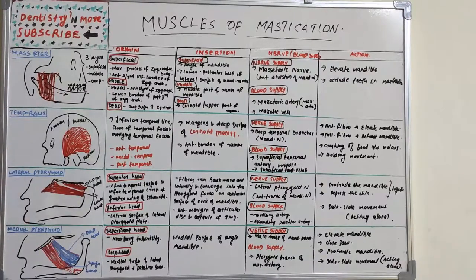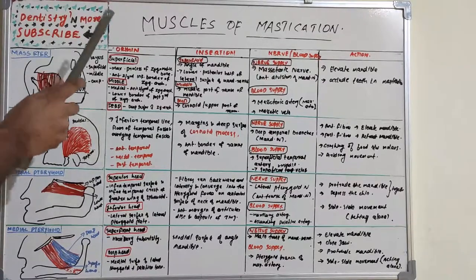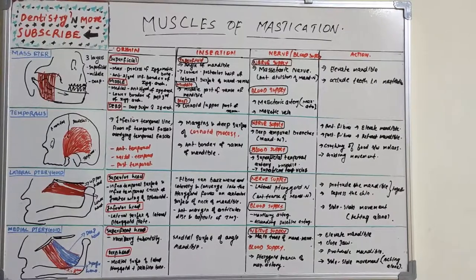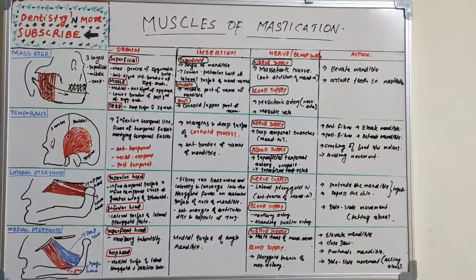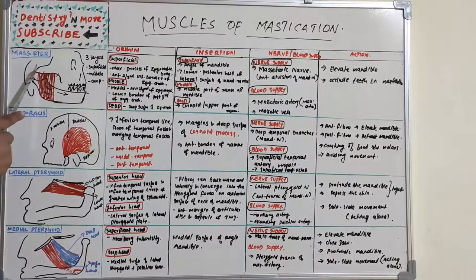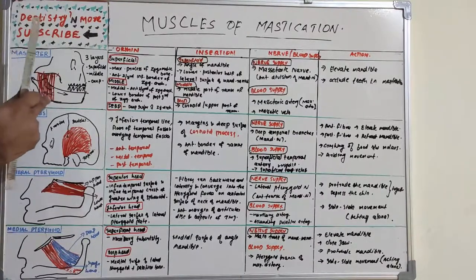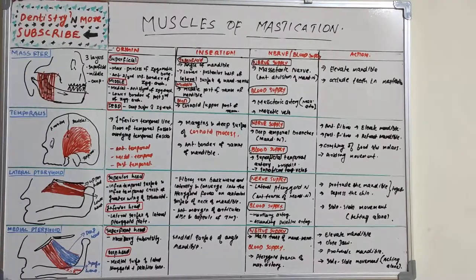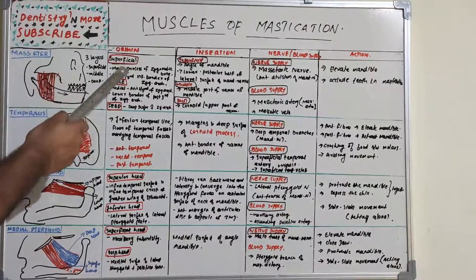Masseter basically elevates the mandible and helps to occlude the teeth in mastication. It is a muscle which has three layers — superficial, middle, and deeper — and it is a quadrilateral muscle, meaning it has four sides. These three layers blend anteriorly.